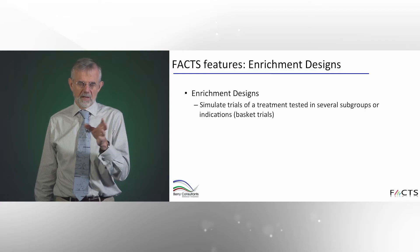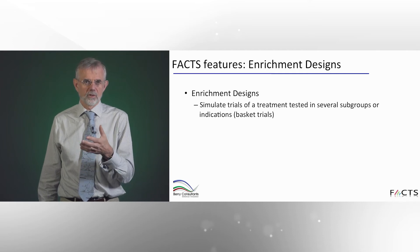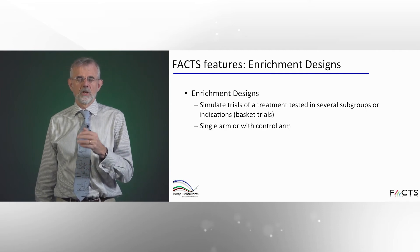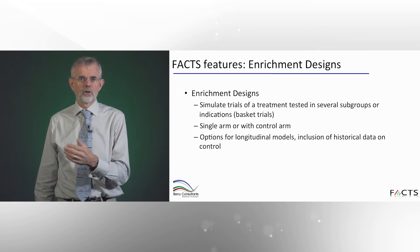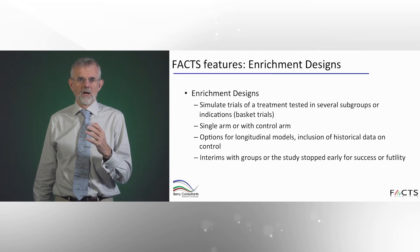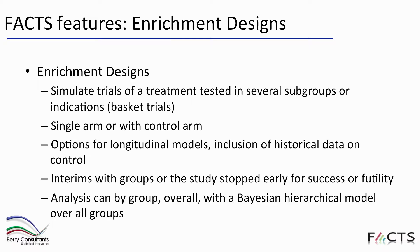In the enrichment designs module, you compare the performance of a treatment — either against historical control or an actual control — across a range of different subgroups or possibly different indications, such as in a basket trial. This can be a single arm or with a control arm but not multiple arms. There are options for longitudinal modelling and historical control data. At interims, individual groups can be stopped for success or futility. Analysis can be by individual group, overall across all groups, or using a Bayesian hierarchical model that borrows across groups according to how similar their responses are — the more similar, the more borrowing.